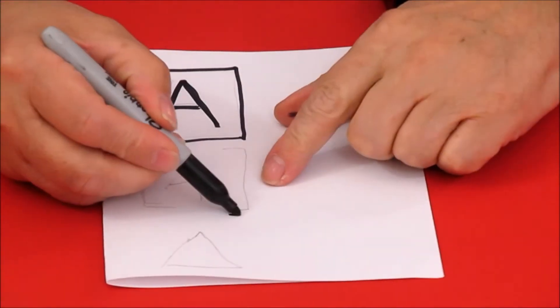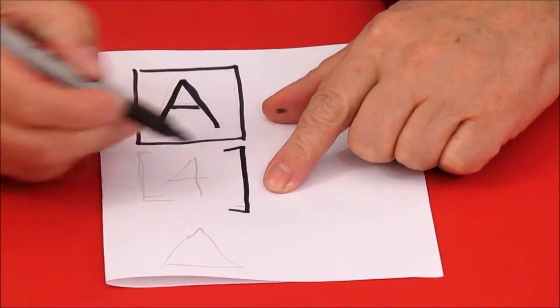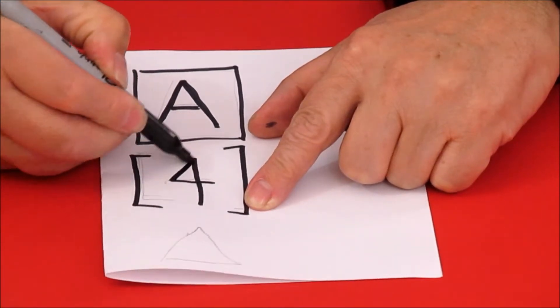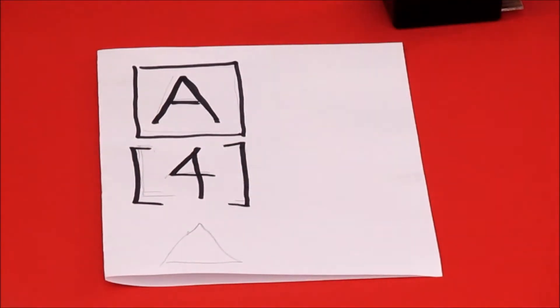If you see this symbol, it's the square brackets with a number, that means four flashes. Okay, there's an LED inside that's going to flash, and that means four flashes.